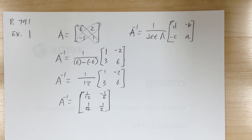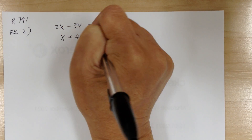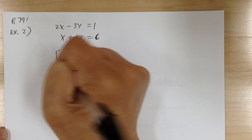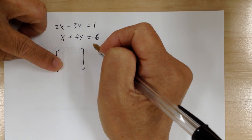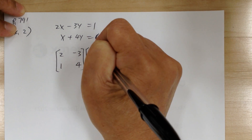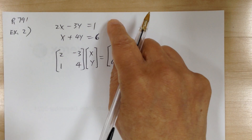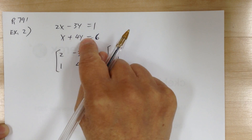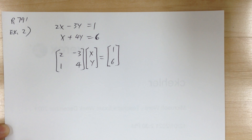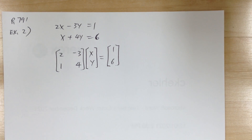Now let's go to Example 2 — how to use the inverse to solve a system of equations. You have 2x minus 3y equals 1, and x plus 4y equals 6. First you need to write this in matrix form. The coefficient matrix is [2, negative 3; 1, 4], the variable matrix is [x; y], and the answer matrix is [1; 6].